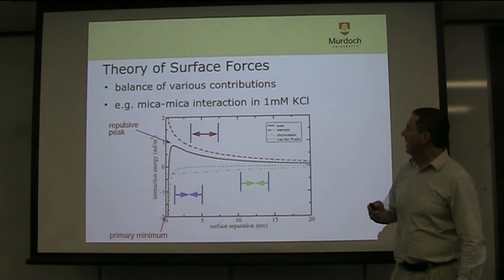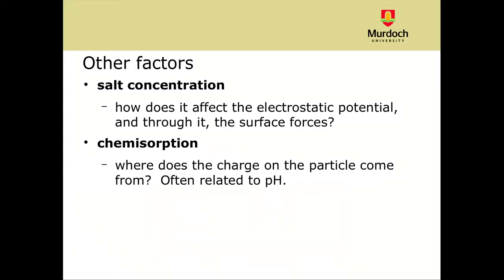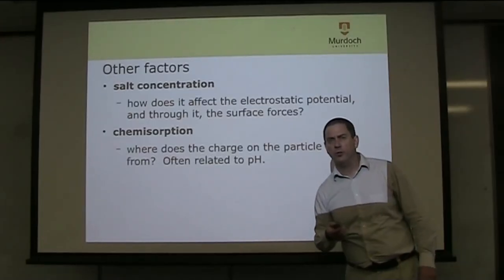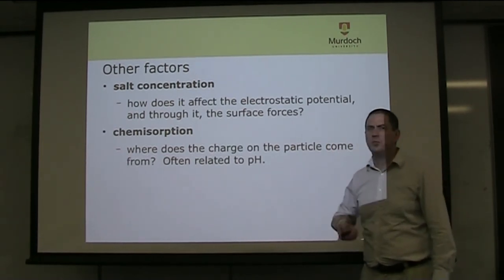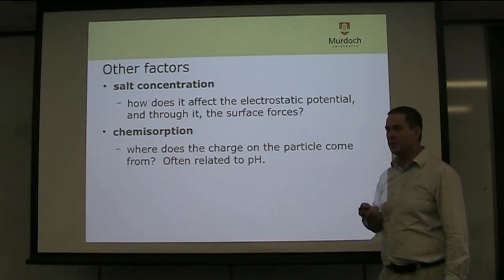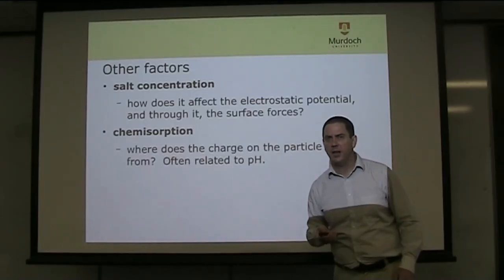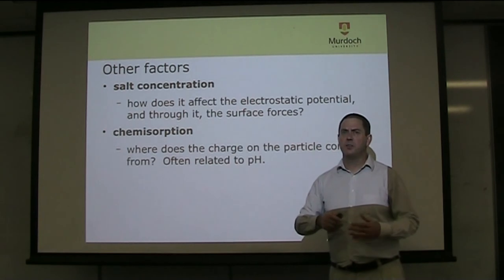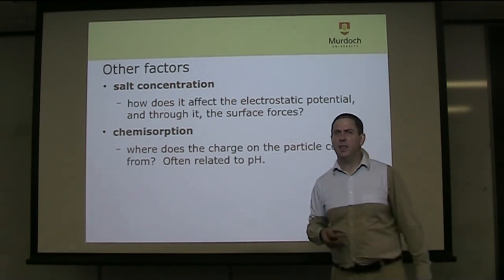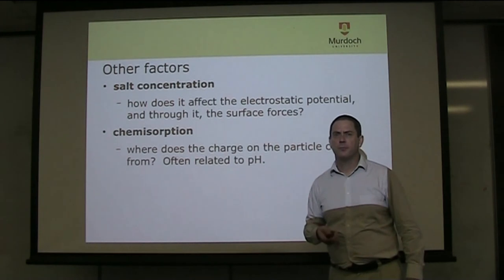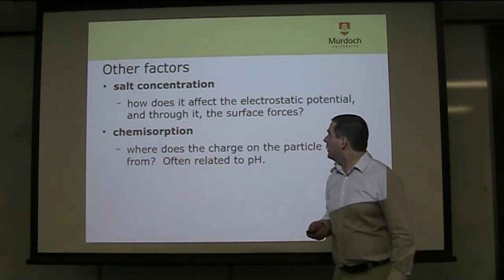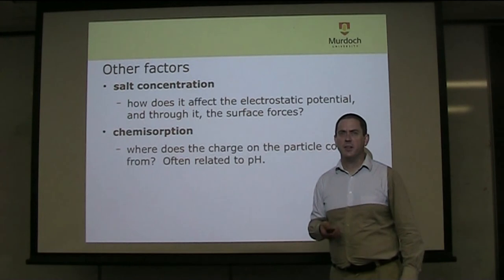So those are the basic ideas. What other factors are there? The effect of salt concentration will affect the electrostatic potential and through it the overall surface forces — concentration is quite an important factor. Chemisorption is the question of where the charge on the particle comes from, typically related to pH. Other factors might include surface roughness, surface layers, or perhaps a polymer colloidal. That's enough to think about for now — I'm happy to take your questions.